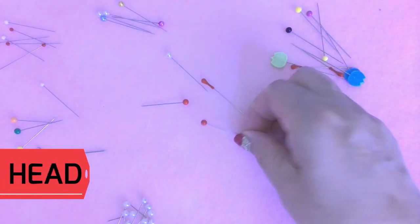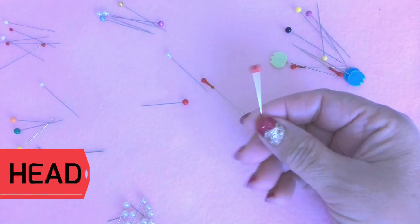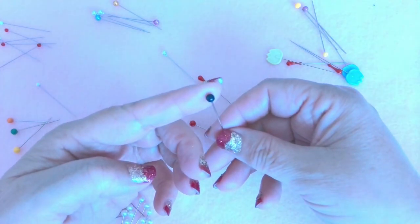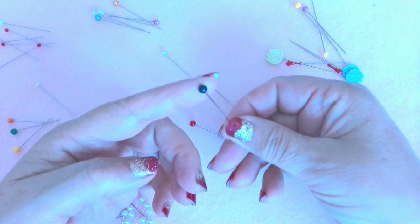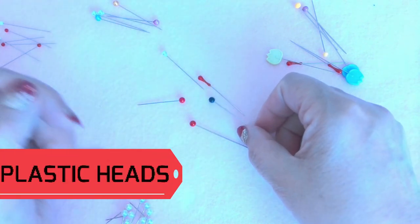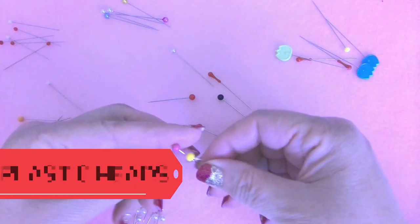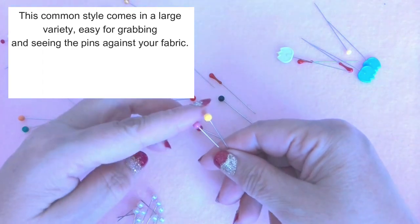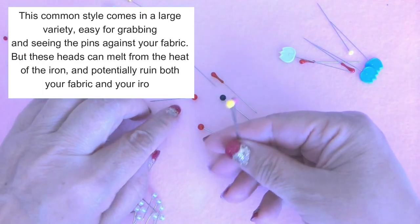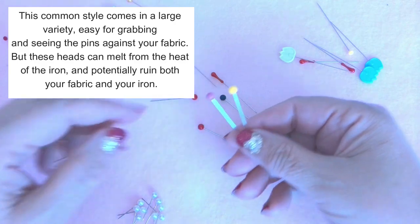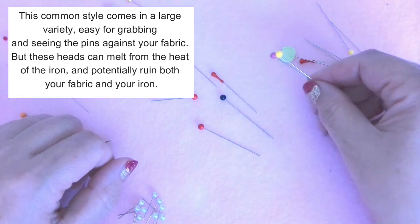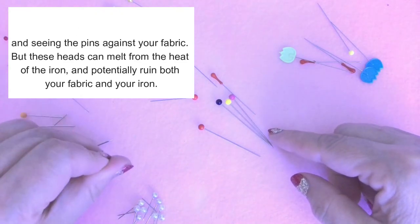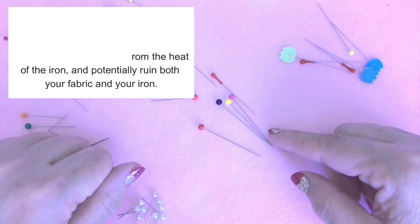What is the head? The head of the pin is the piece at the end that you can grab and hold onto. Heads can vary in shape, size, color and materials. Plastic heads. This common style comes in large variety, easy for grabbing and seeing the pins against your fabric. But these heads can melt from the heat of the iron and potentially ruin both your fabric and your iron.